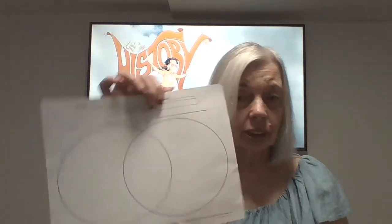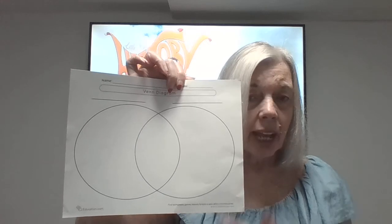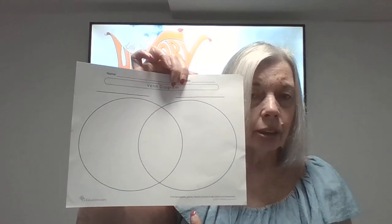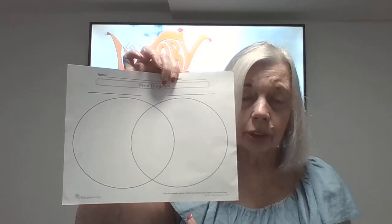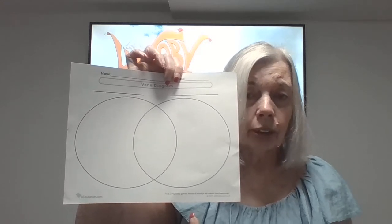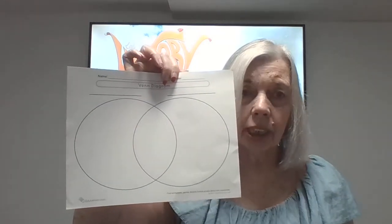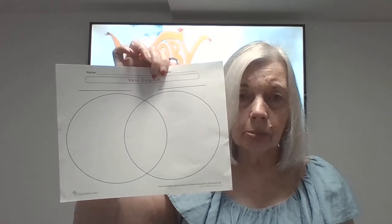In math, you can use this for numbers and number combinations. You can put a number in the center of the diagram — let's say we use the number 12. Then in the two circles, you can look at different number operations to come to the number 12: addition, subtraction, multiplication, division — all the ways you can come up with the number 12.